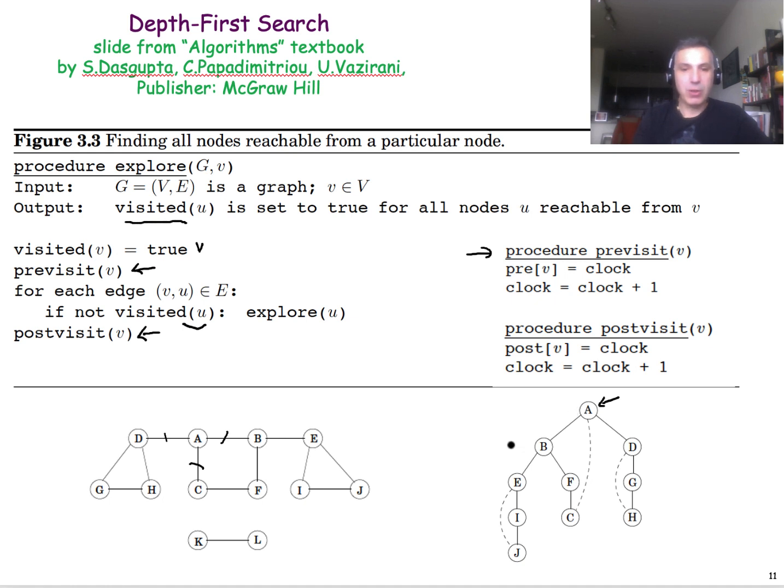so we first go to B, it's a node that we have not visited before, so we call the explore function again on node B. Note that that is the time that the pre-visit timestamp is set for node B, when we first call the explore function for node B.